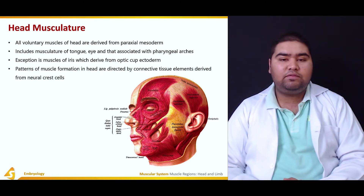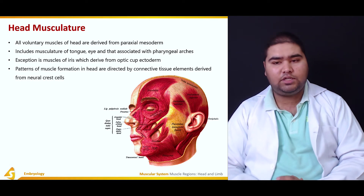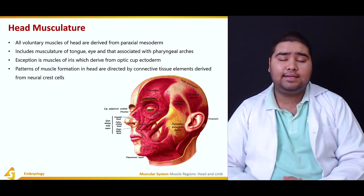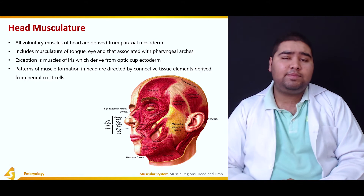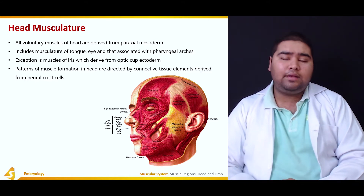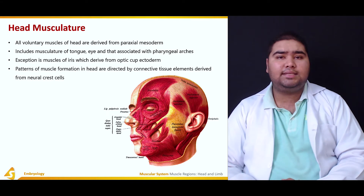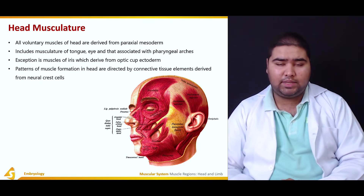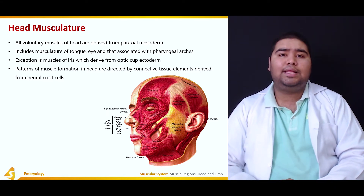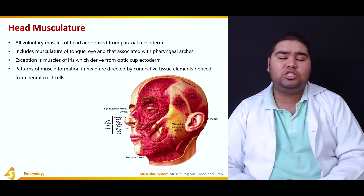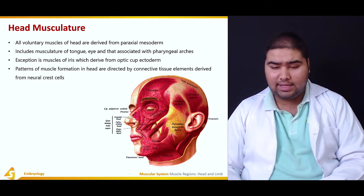Patterns of muscle formation in the head are directed by the connective tissue elements, which are derived from the neural crest cells. The patterning of muscle in the human body is actually determined by the connective tissue elements, and in the head region these connective tissue elements originate from the neural crest cells.